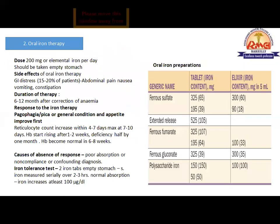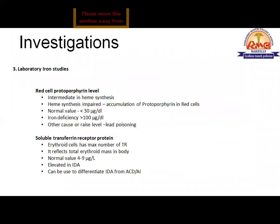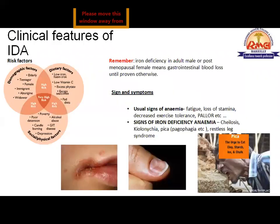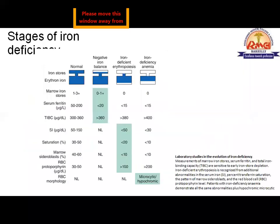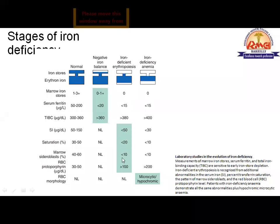To summarize the stages of iron deficiency: in negative iron balance (stage 1), everything is normal but stores start decreasing. In iron-deficient erythropoiesis (stage 2), iron values start decreasing. In frank iron deficiency anemia (stage 3), anemia develops.